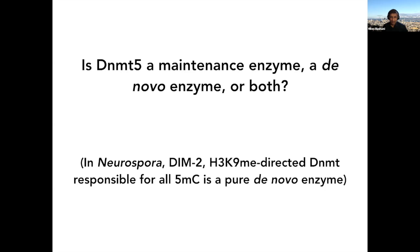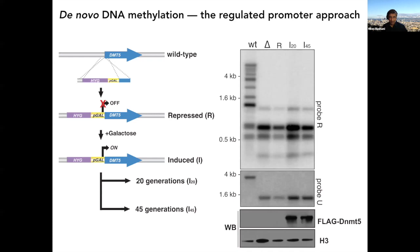We did similar experiments in Cryptococcus. We knocked in a galactose-regulated promoter upstream of DNMT5 and first repressed it — after enough generations, you lose DNA methylation. When we added galactose to induce DNMT5 for 20 or 45 generations, with tons of protein being made, we don't see any restoration of DNA methylation.